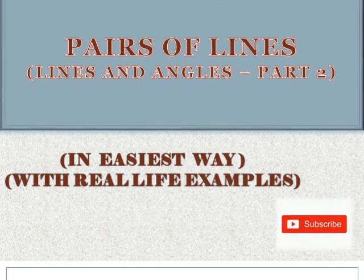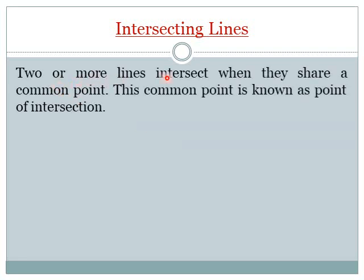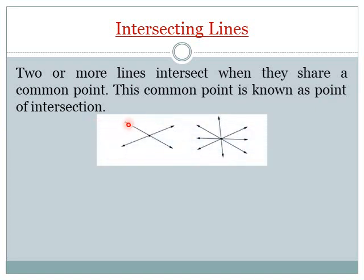So what are intersecting lines? Two or more lines intersect when they share a common point. This common point is known as the point of intersection. For example, see here — these two lines intersect at this point. So what do we call this? It is the point of intersection.